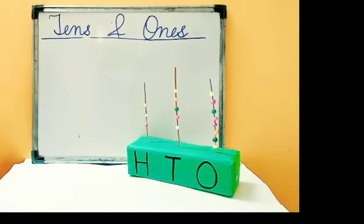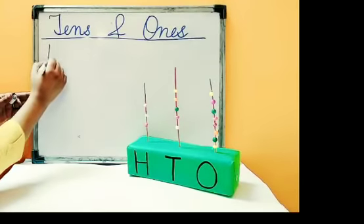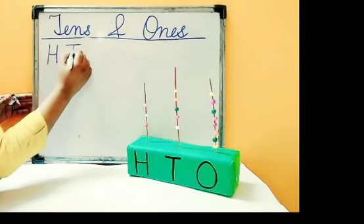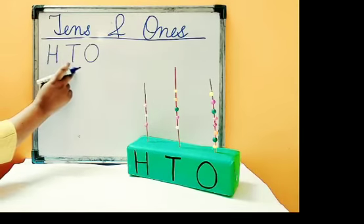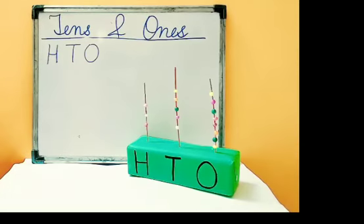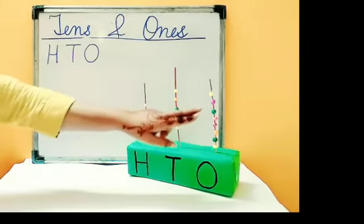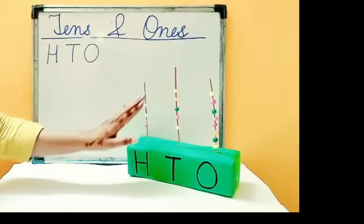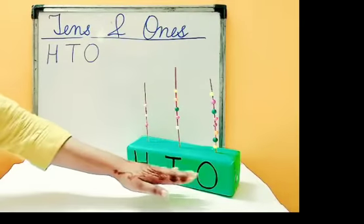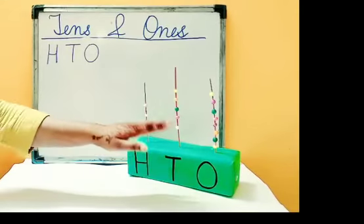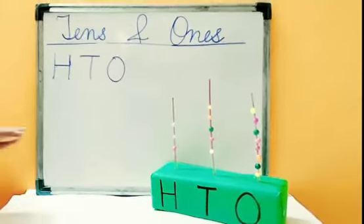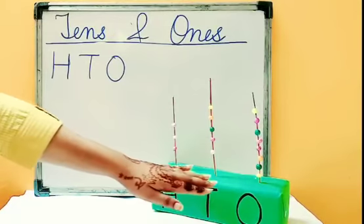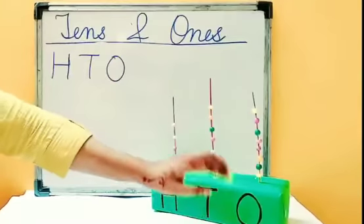T shows tens. For an example, H shows hundred, T shows tens, and O shows ones. So firstly, we will count all the bits from each of the place value. And the numbers of bits we will write here. So let's start counting bits at ones place.